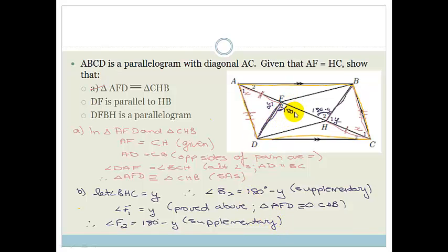So, therefore, this is 180 degrees minus Y. And these two are equal, but they form the alternate shape. Therefore, this line must be parallel to that line. Pretty awesome. So, therefore, angle F2 is alternate to angle B2, therefore, FD has to be parallel to BH. We've done that.